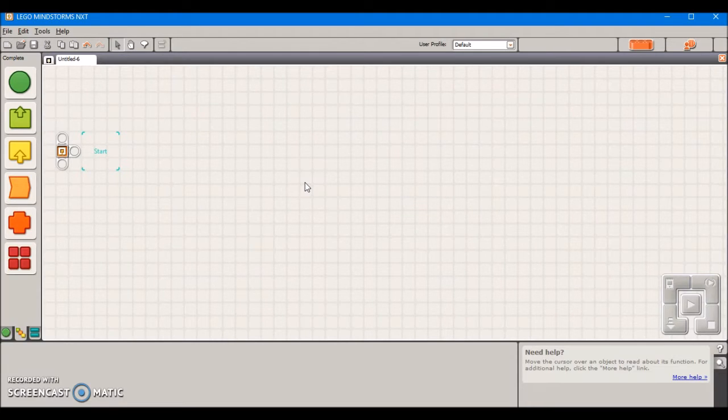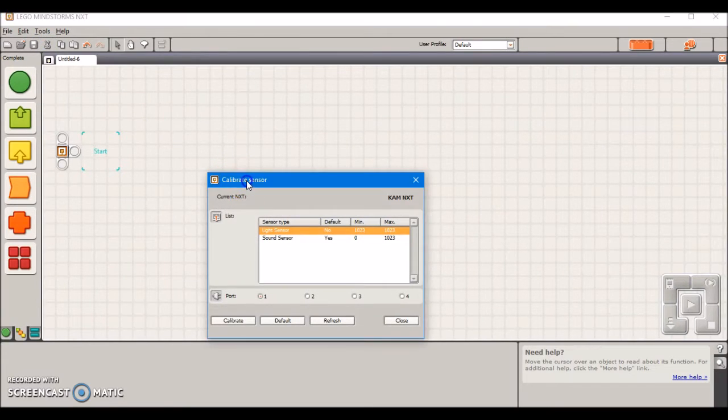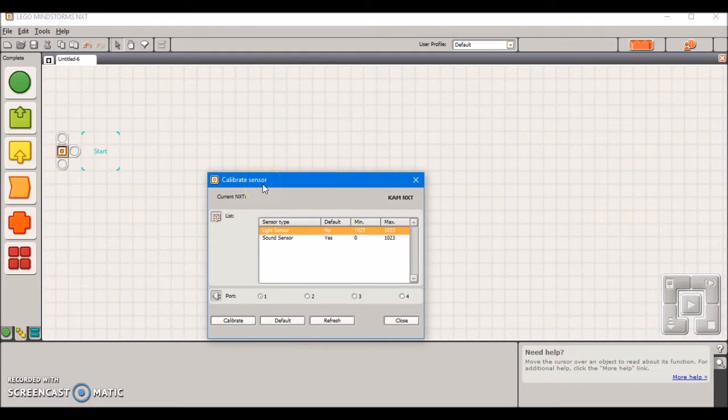In order to access these, what you need to do is go up to Tools, Calibrate Sensors, and it's going to connect to your NXT and see what kind of sensors are available.